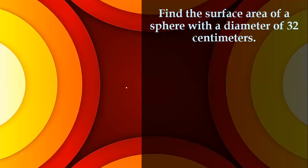Find the surface area of a sphere with a diameter of 32 centimeters. The formula to get the surface area of a sphere is the surface area equals 4 times pi times the radius squared.